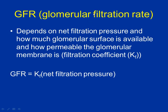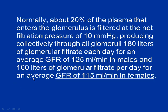GFR = coefficient × net filtration pressure. If you increase the net filtration pressure, GFR increases proportionally — the coefficient is constant. Normally about 20% of the plasma going into the glomerulus is filtered. So if 5 liters of blood enter the kidney per minute, about 4 liters come out, meaning roughly 1 liter of filtrate is made per minute. On average, about 180 liters are filtered every day — that's 90 two-liter bottles — yet you don't urinate nearly that much. What happens to most of it? It gets reabsorbed.